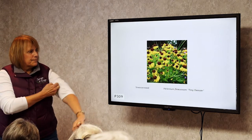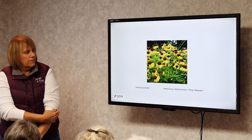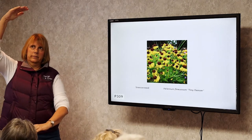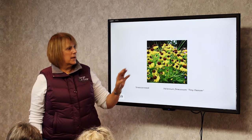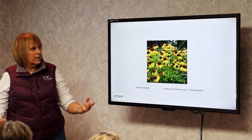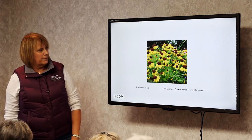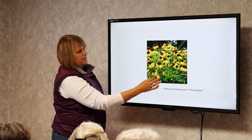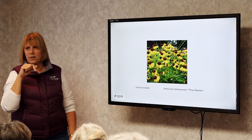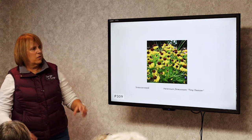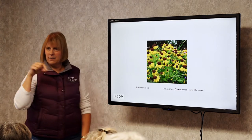Sneezeweed. There are different cultivars of varying heights. Dry soil, full sun, and it blooms like crazy. It's a great bee plant and butterfly plant. Whenever you see a flower shaped like this, it's a great place for a butterfly. All composite flowers like coneflowers and black-eyed Susans are great butterfly plants because they give the butterfly a place to sit and take its time while eating.